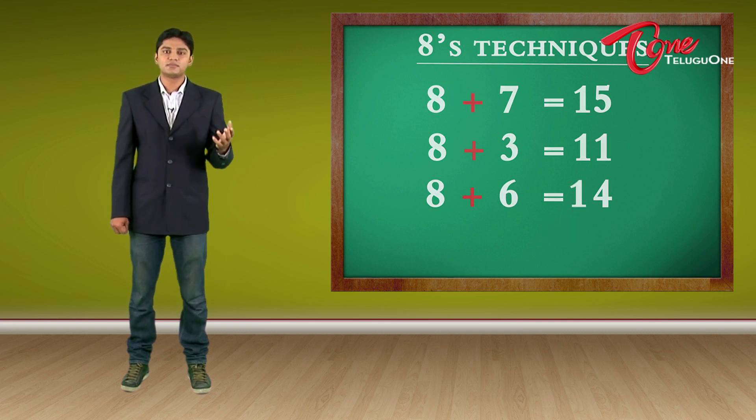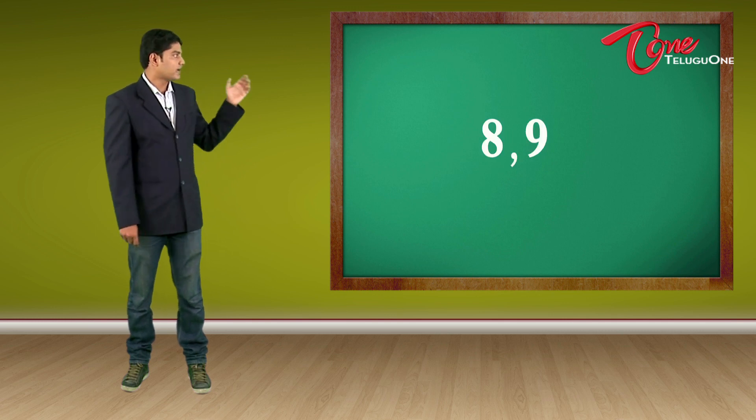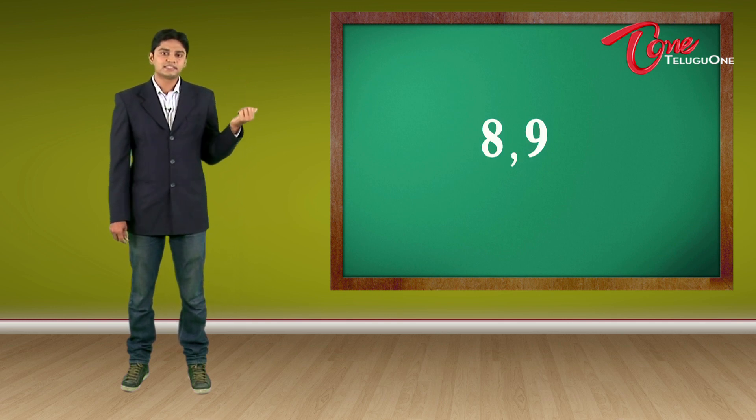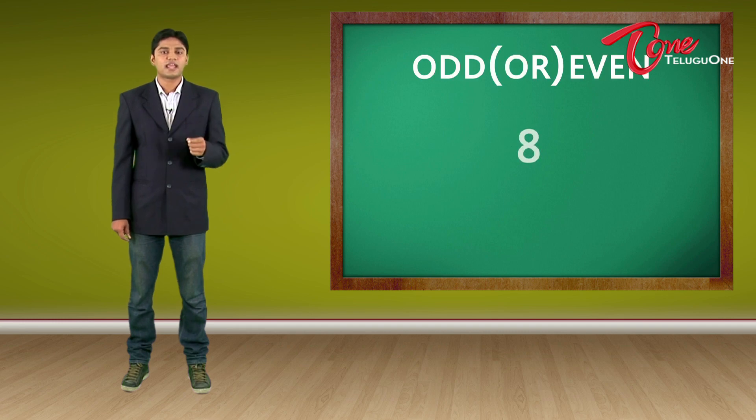This way, whenever we are adding big numbers to 8 or 9 or any number to 8 or 9, you can directly get the answer just by checking for 9's technique, the before number and playing a small game of odd or even for 8.